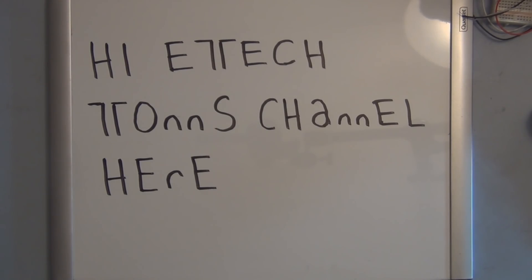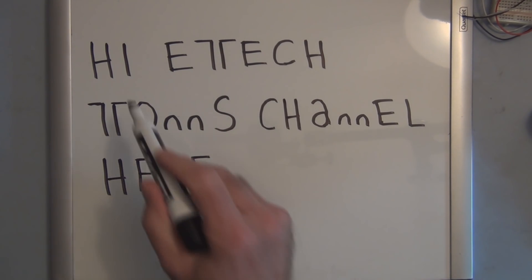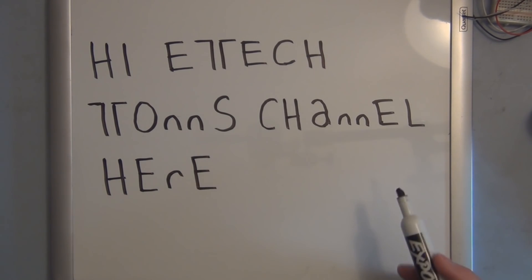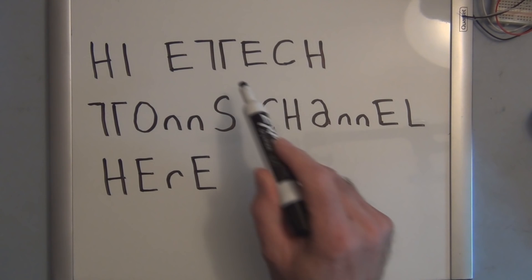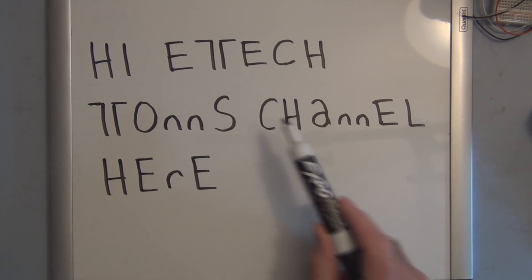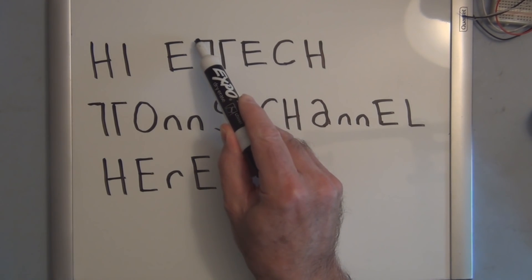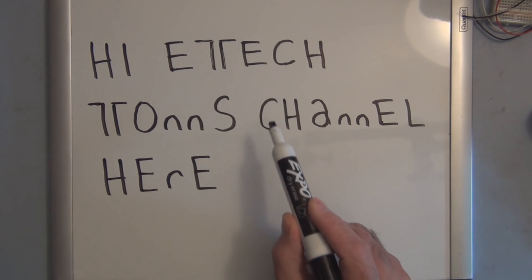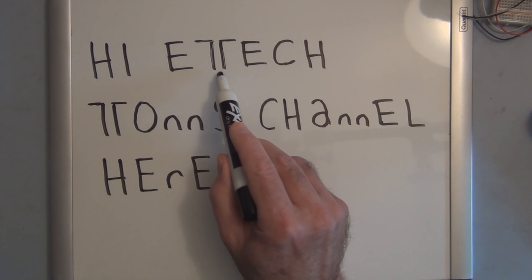I don't know if you could make it out - this is the message that I was displaying in ticker tape fashion. It's "Hi E-Tech Tom's Channel Here." Like I said, you can't really create the T, so I was trying to have the T formed by two segments or two displays.